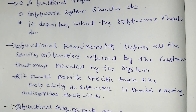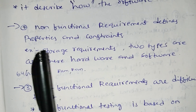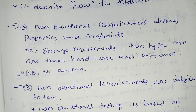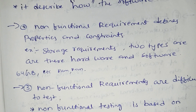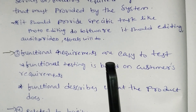The second comparison: non-functional requirements. Non-functional requirements define properties and constraints — for example, storage requirements. There are two types: hardware and software — such as 64GB RAM or ROM, and 128GB RAM.